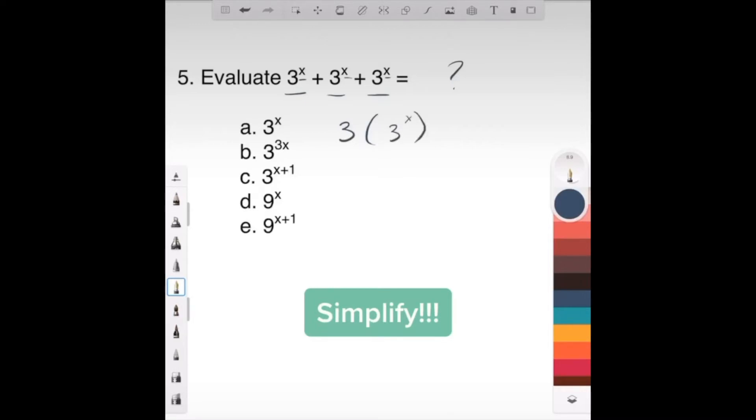Now, three by itself is to what power? It's to the one power. Now, what do you know? If you've got the same base, what are you allowed to do with exponents? You're allowed to add the exponents. So you can write this as what? Three to the one power plus x, which is exactly the same thing as three to the x plus one.